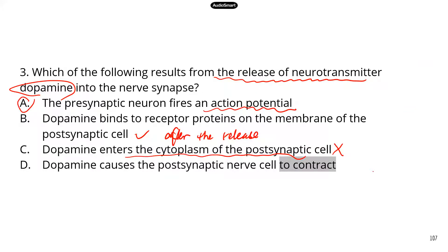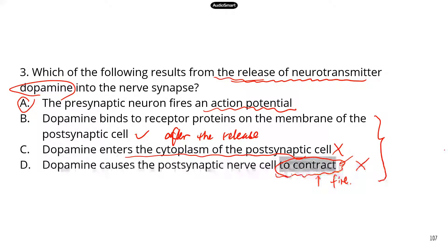Answer D: dopamine causes the postsynaptic nerve cells to contract. The statement itself has an issue — nerve cells do not contract. You could change 'contract' to 'fire' or 'generate electrical impulses,' since only muscle cells can contract. Also, this event happens after the release of neurotransmitter, not before. B, C, and D are all events that happen after the release of neurotransmitter, so they cannot cause the release of dopamine. Even without knowing what dopamine is, familiarity with the process lets you eliminate the wrong answers.